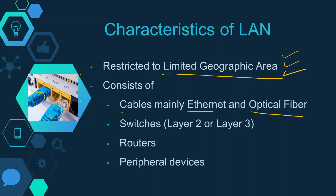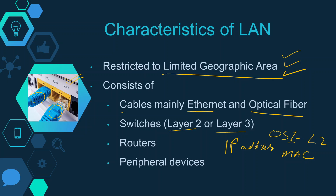The LAN also consists of switches, as shown in this picture. The switch may be a Layer 2 switch or a Layer 3 switch. The Layer 2 switch, as the name suggests, works on Layer 2 of the OSI model — it only understands and stores MAC addresses. The Layer 3 switch works on Layer 3 of the OSI model, and we can also configure IP addresses on a Layer 3 switch.